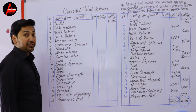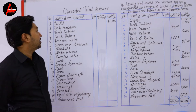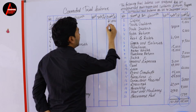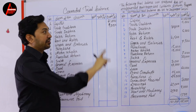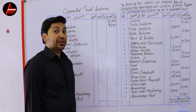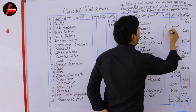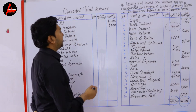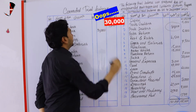Next is trade creditors. It is a liability, and you already know liability is always credit because the business owes money. Nine thousand dollars — this is also written correctly. Next is trade debtors, which means trade receivables — it is an asset. Asset is always debit, and it is written correctly on the debit side: 3 thousand dollars.